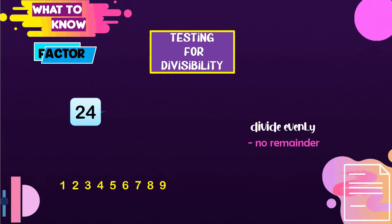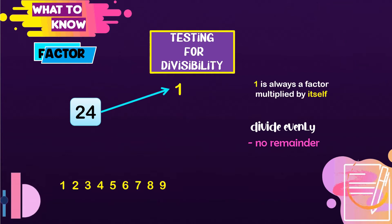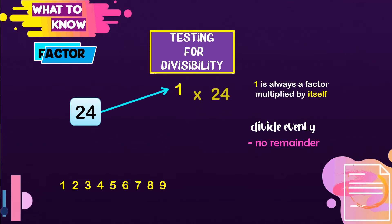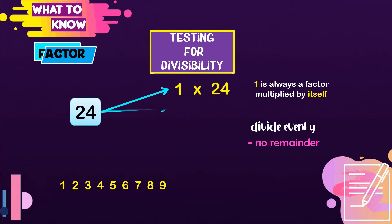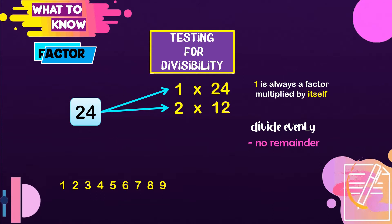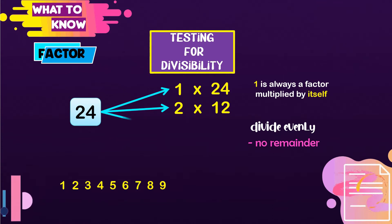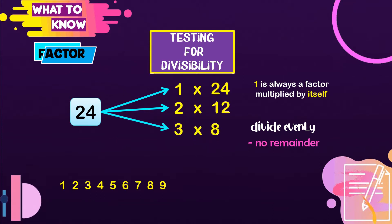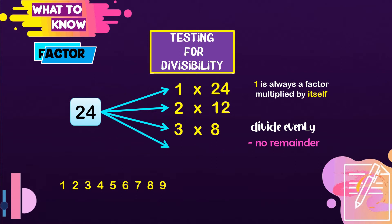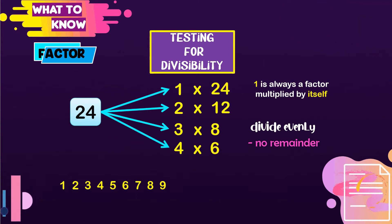Let's start with 1. And 1 is always a factor multiplied by itself, so 1 times 24 is 24. Next, 24 is divisible by 2, and 2 times 12 is 24. 24 is divisible by 3, and 3 times 8 is 24. 24 is divisible by 4, and 4 times 6 is 24.